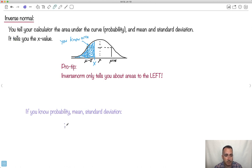So you know the area. You know this area from here to the left. Then you can ask your calculator for something called inverse norm. I'll write it in blue here. This is called inverse normal or inverse norm. What do you have to give it? You have to give it the area, the mean, and the standard deviation. What does it give you?